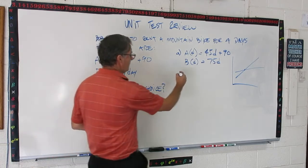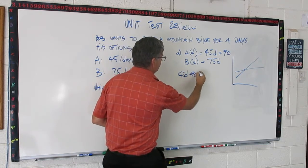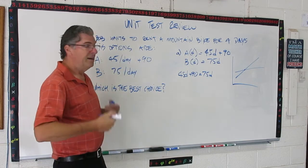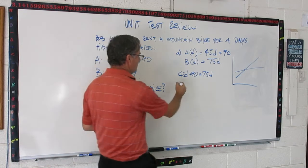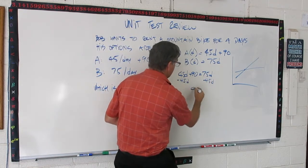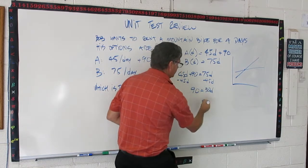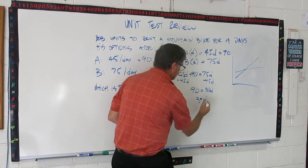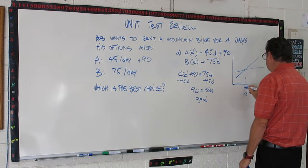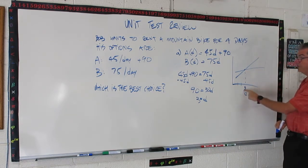Okay? Let's see how you did. I'm going to write 45d plus 90 equals 75d. I just set both equations equal to each other. Now, let's solve for d. I'm going to subtract 45d from both sides, and I get 90 equals 30d divided by 30, and I get 3 equals d. So, number of days, that's 3.